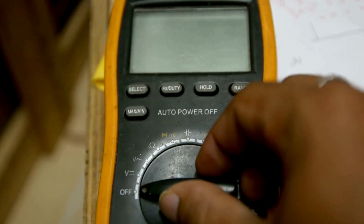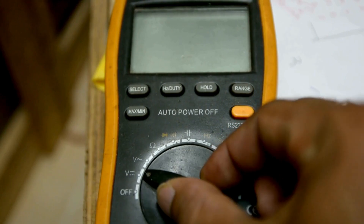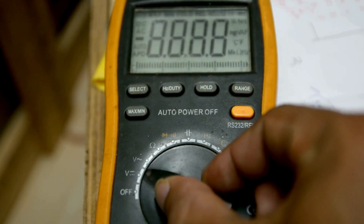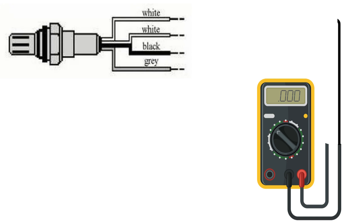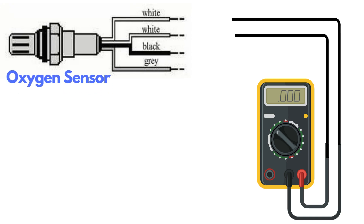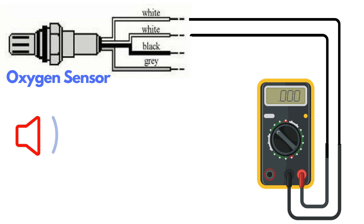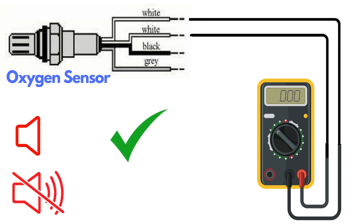To test the heater circuit, you'll need a multimeter. Set the multimeter to check for continuity, then place the probes on the two heater wires. If the circuit has continuity, the multimeter will beep, indicating that the heater is functioning. If there's no beep, it means the heater circuit is broken and you'll need to replace the oxygen sensor.